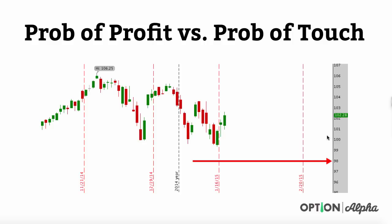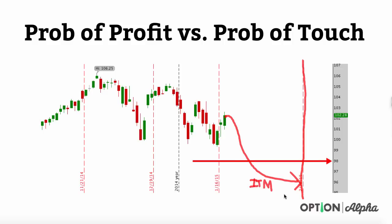Looking at the chart of the Qs, you can see live data with the stock trading a little over 102 and our strike price at 98. The probability of ITM is the likelihood that sometime before expiration — this line right here — the Qs trade down to and stay below 98. Probability of touch says at some point the Qs might come down to 98, touch it but not end there. This gives you an idea of how many times you might hold a losing trade that might not end up being a losing trade.